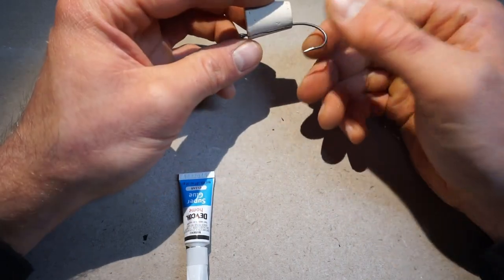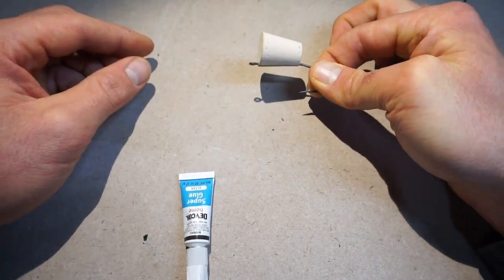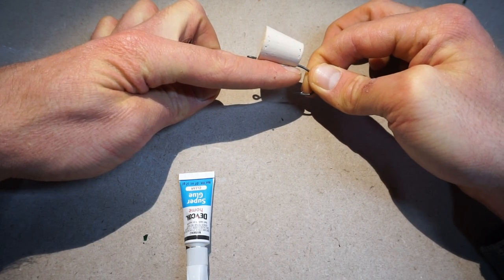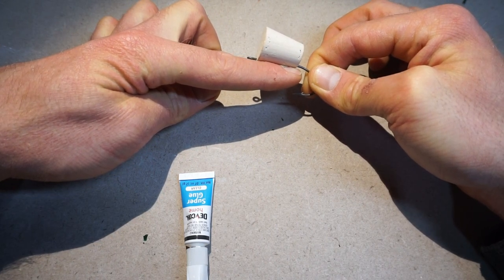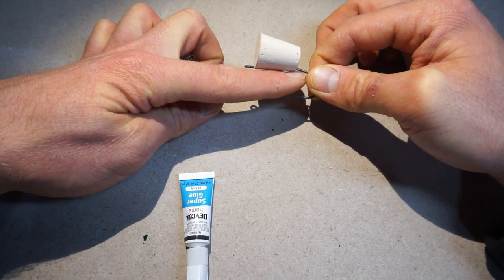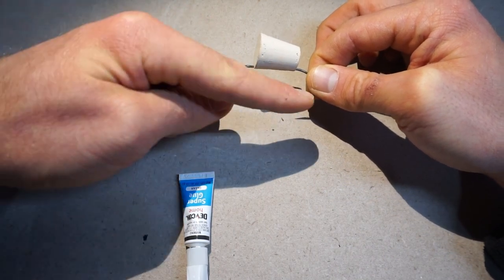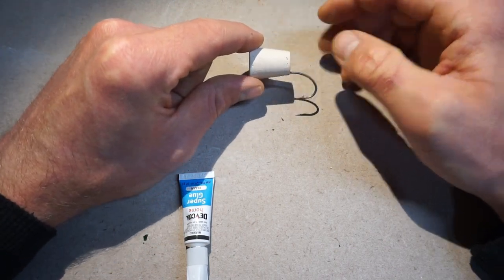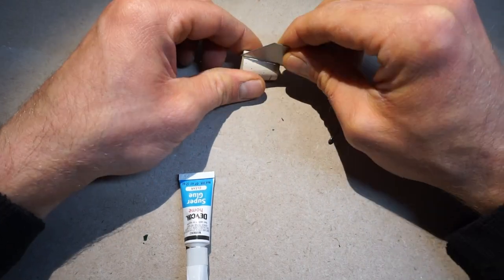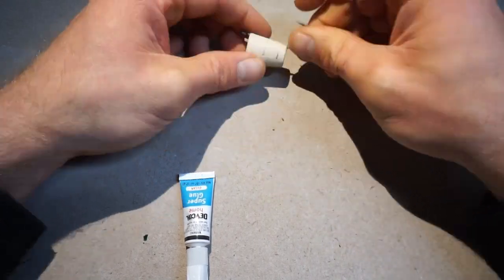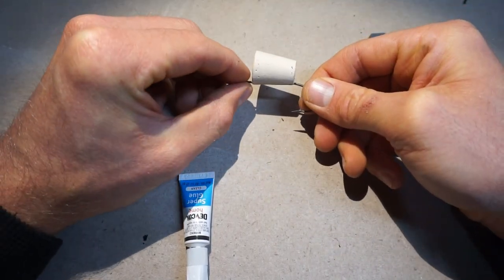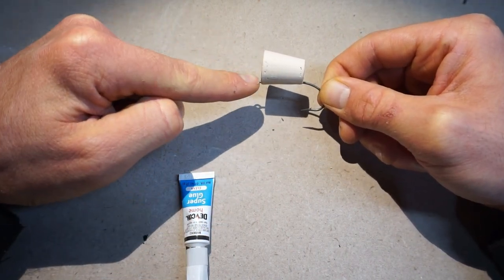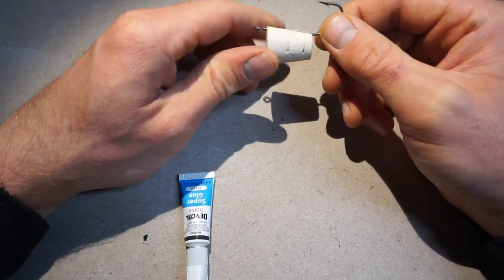The next thing to worry about is how the popper is going to lay in the water. This is the surface of the water. This popper is going to point like this. The hook is pointing down a little bit too much. Because this is going to float in the water like this, you can see the shank is pointed down. We want the backside to be sunk up in a little bit more.